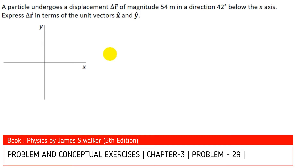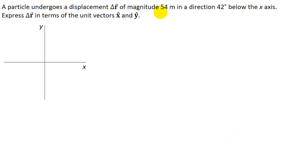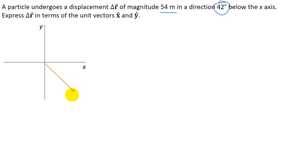This is the question where we are given that a particle undergoes a displacement of magnitude 54 meters in a direction 42 degrees below the x-axis. I will sketch this displacement vector. This would be the displacement vector — let us name it Delta R — this angle is 42 degrees, and the magnitude of Delta R is 54 meters.